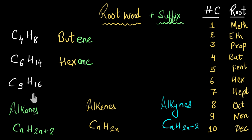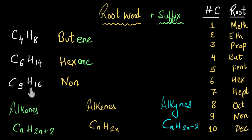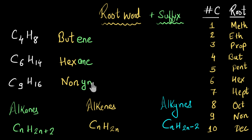For this molecule with 9 carbon atoms, the root word is 'non'. Checking the hydrogen count: 9 times 2 is 18, but the hydrogen number is 16 — that's 2 less than 18. Two less than twice means alkyne, so we use the suffix '-yne', making the name 'nonyne'.